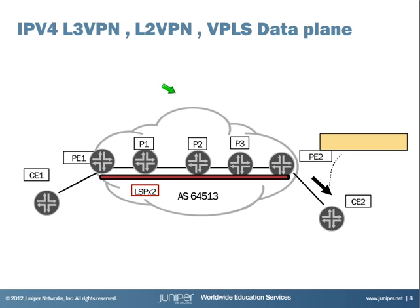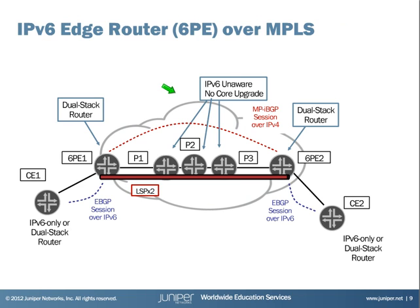So how can a service provider offer IPv6 services with minimum configuration, minimum software, and hardware change? The answer is simple: 6PE or 6VPE. In this learning part I will focus on 6PE. 6PE allows service providers to offer IPv6 services while using all the benefits of MPLS infrastructure like fast reroute, traffic engineering, and so on.